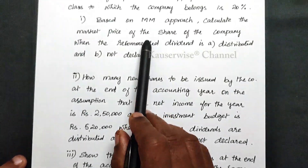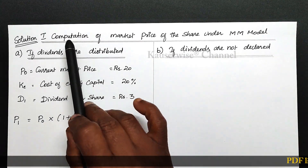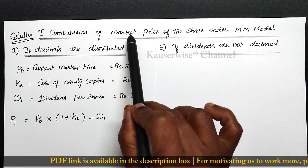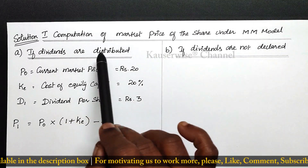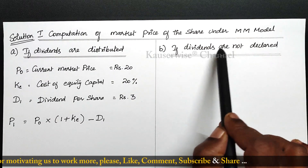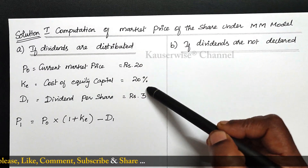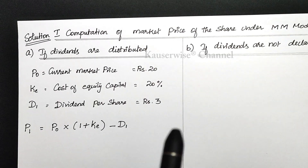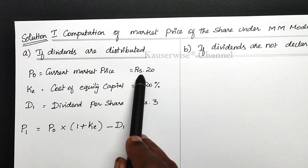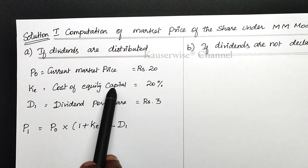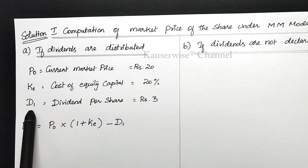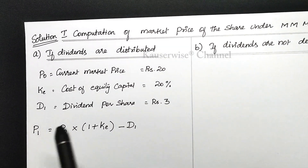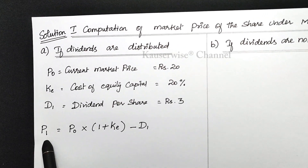Let us see the solution for the first point: computation of market price of the share under the MM approach. We are going to find out market price per share if dividends are distributed, and also if dividends are not declared. The given information is: P0 is rupees 20, KE is 20 percentage, and D1 dividend per share is rupees 3. We are going to find out the market price per share at the end of the year.